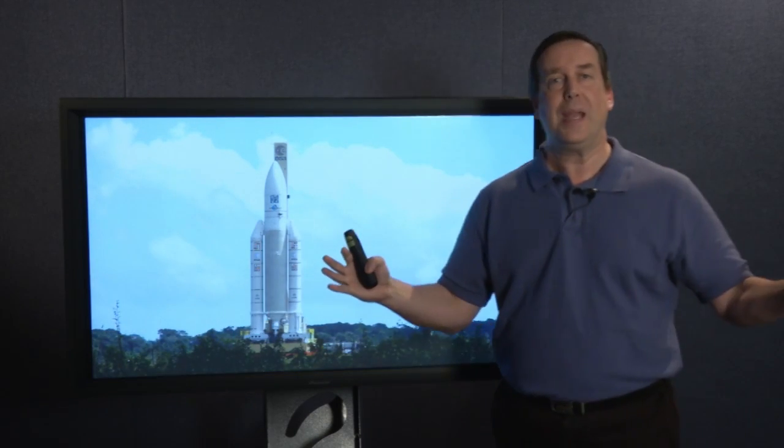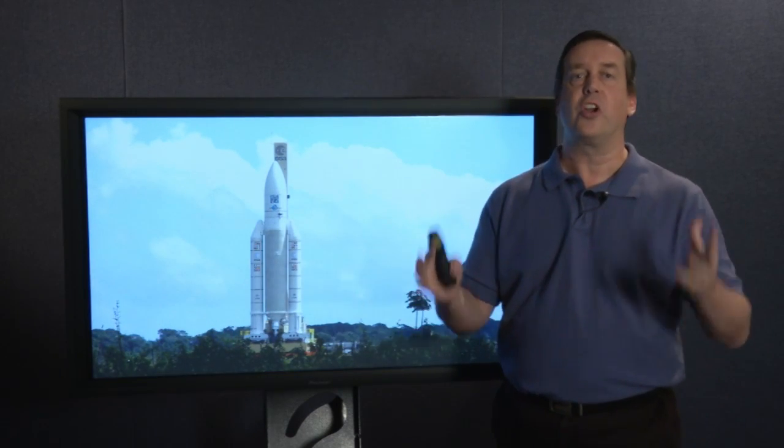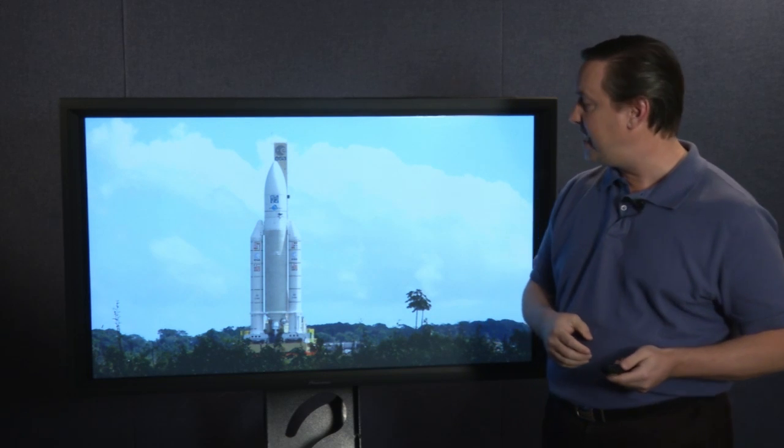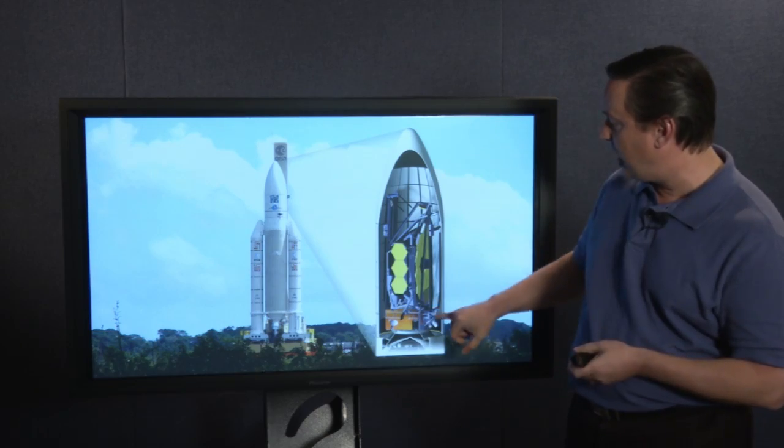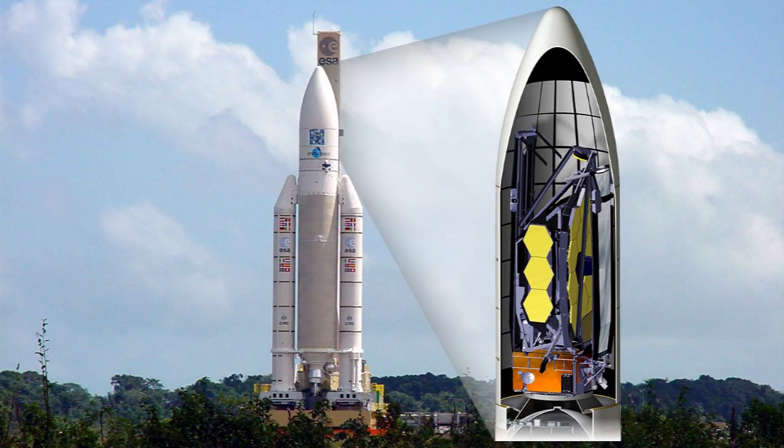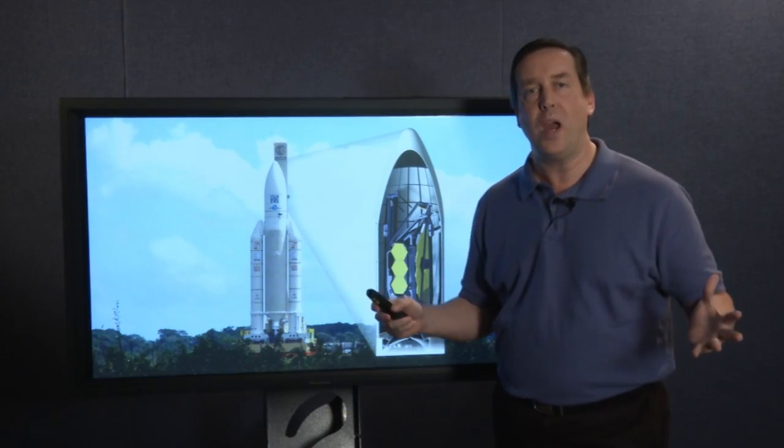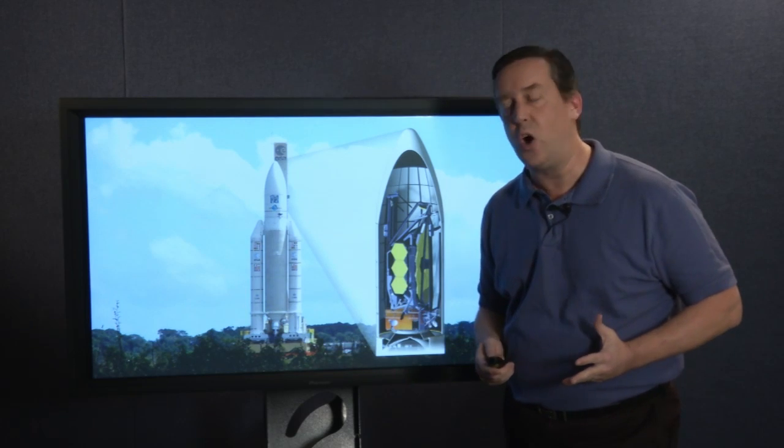Now, when are we going to be able to get this? Well, I told you earlier, it's not going to launch until 2018. It's going to launch on an Ariane 5 rocket, and up in the top of the rocket, that's where the James Webb Space Telescope will be folded up. Yeah, that's a long way away, but so much has been done already.